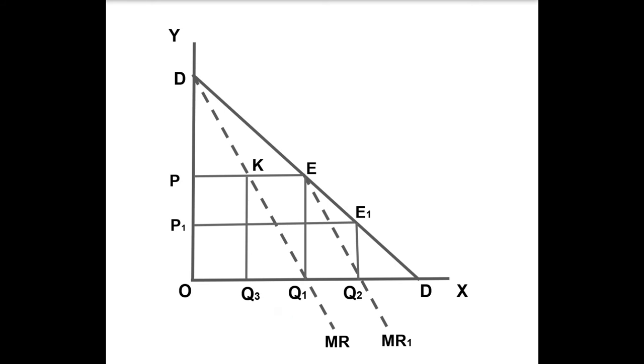Seller B also recognizes this interdependence and realizes that by selling Q1 Q3 amount of output at a higher price OP, he will share the monopoly profit.